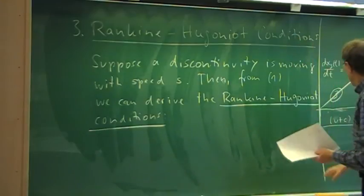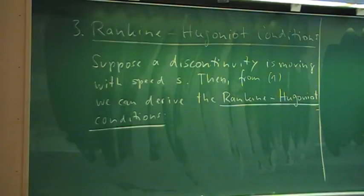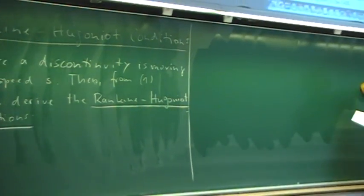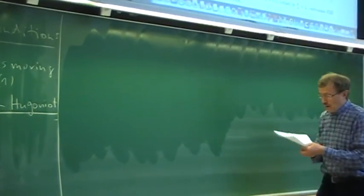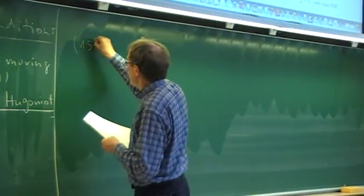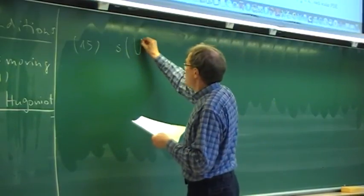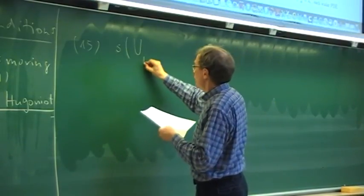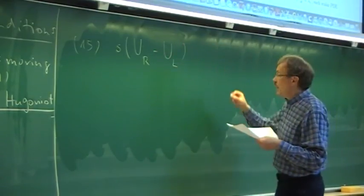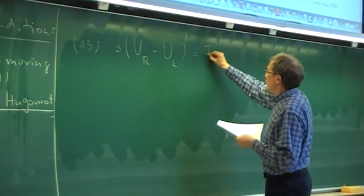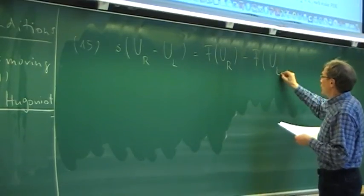We can derive and express the Rankine-Hugoniot conditions in the following form (equation 15): the speed s of the discontinuity times the jump in the conserved variables equals the jump in the flux — that is, the flux evaluated with the right state minus the flux evaluated with the left state.